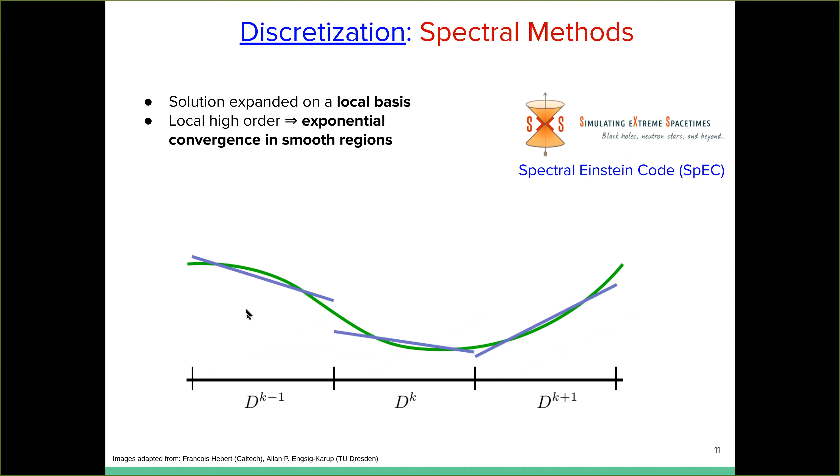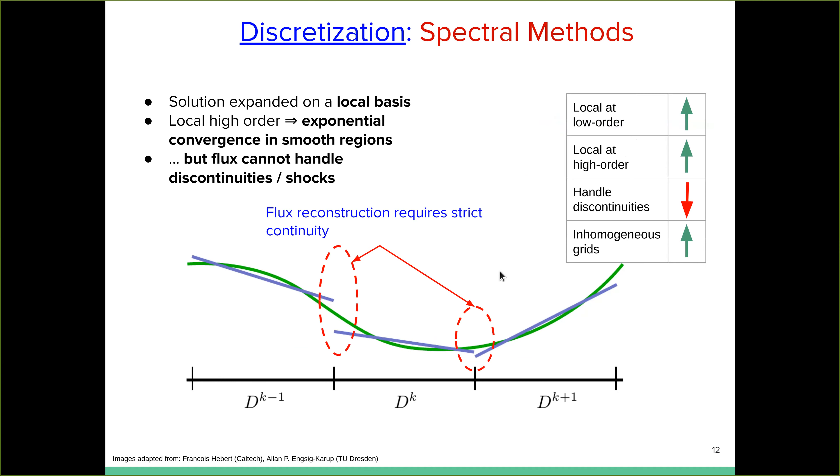Of course you can take the expansion to higher and higher order by taking the next order basis function and the next and the next and so on. And in fact, in this is the method that is currently being used by the SpEC code. And we typically use between 10 to 12 basis, 11 basis elements in each of each of the sub domains of our full domain. Right. The problem of course, with this solutions discretization scheme is that it requires exact or strict continuity of the solution field across all the domain boundaries.